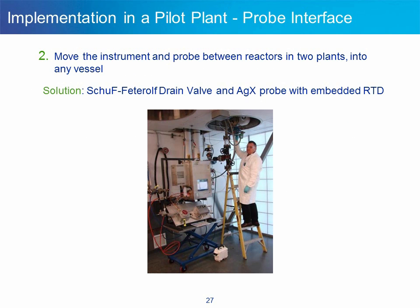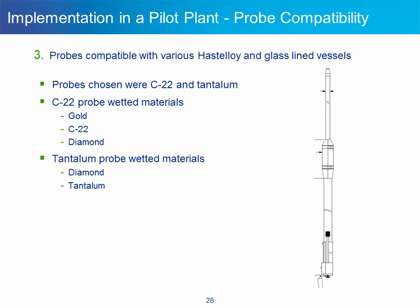Requirement number two — operators must be able to move the instrument and probe between reactors and two plants and insert the probe into any vessel chosen for a pilot study — was met using a Swagelok drain valve and silver halide probe with embedded RTD. Requirement three — probes compatible with various Hastelloy and glass-lined vessels — was addressed by choosing C22 and Tantalum probes. On the C22 probe, the wetted materials are gold, C22, and diamond, allowing access to a wide range of chemical systems especially in Hastelloy reactors. On the Tantalum probe, the wetted materials are gold, diamond, and Tantalum, used extensively in glass-lined reactors.